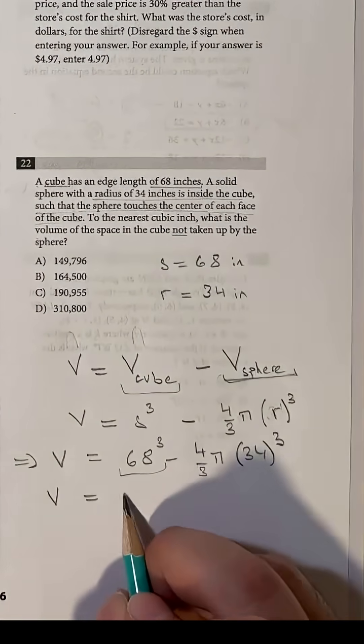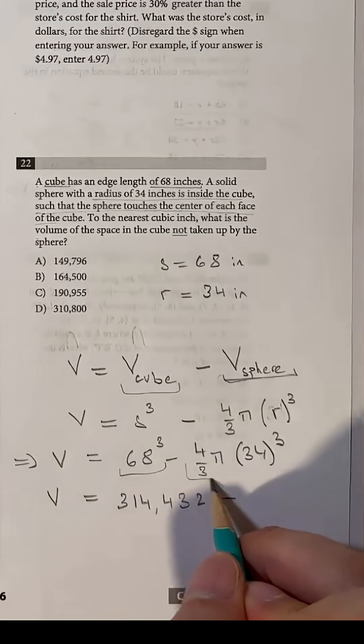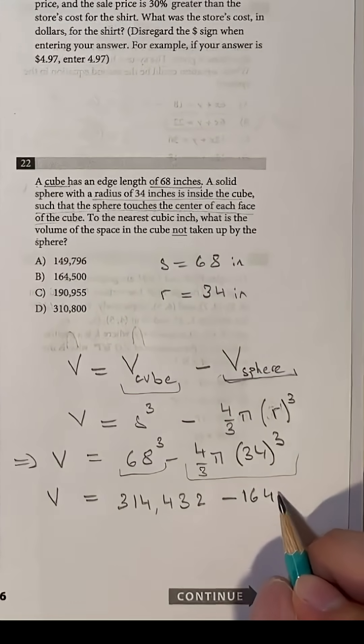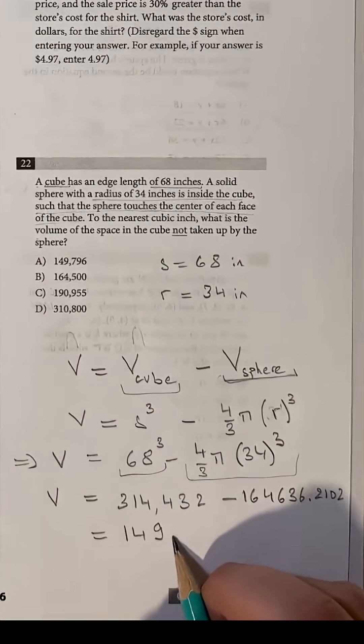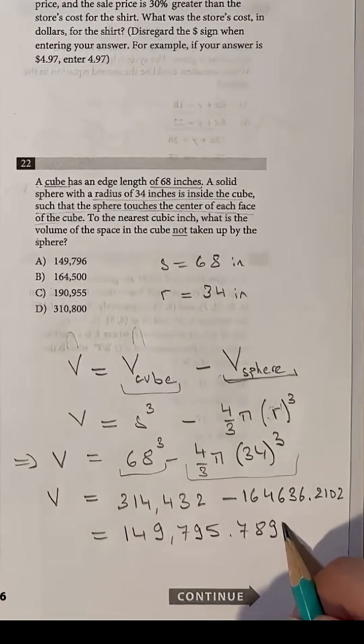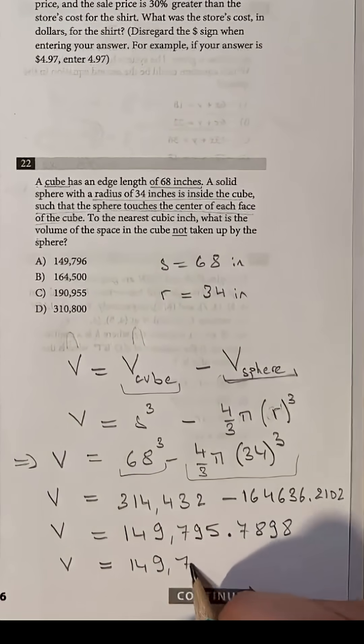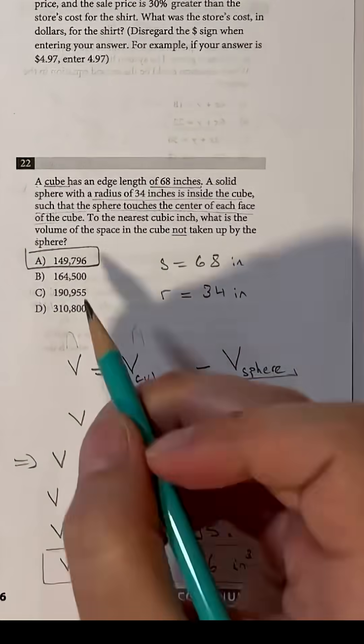68 cubed is 314,432 and the volume of the sphere is 164,636.2102. This gives us 149,795.7898. By rounding, we get 149,796, which is choice A.